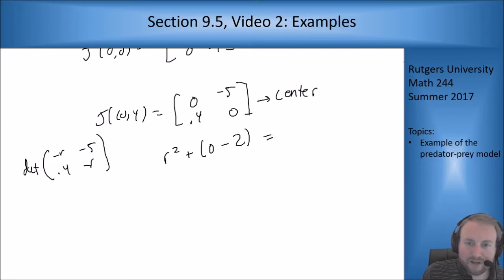Which means plus 2, because it's going to be a minus minus 2, a lot of negatives there, which means r squared equals minus 2, r equals plus or minus root 2i.